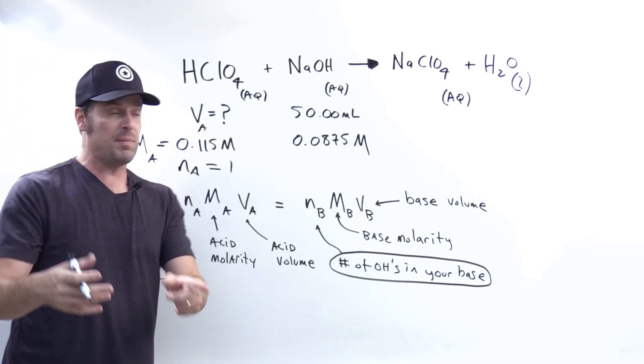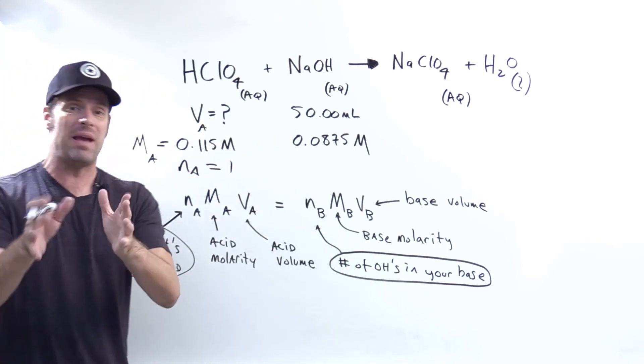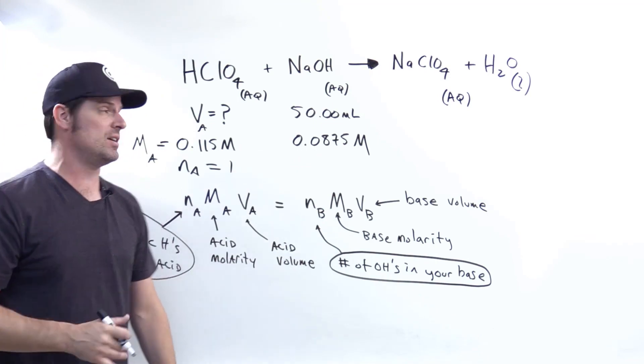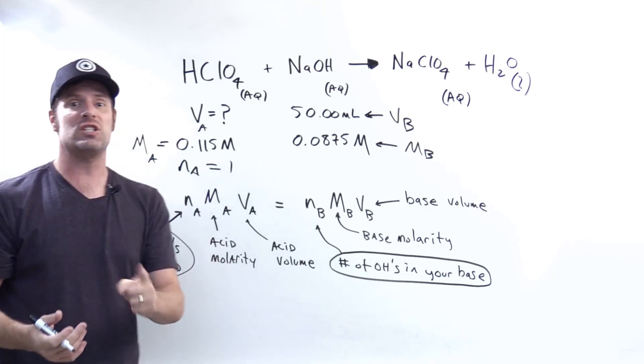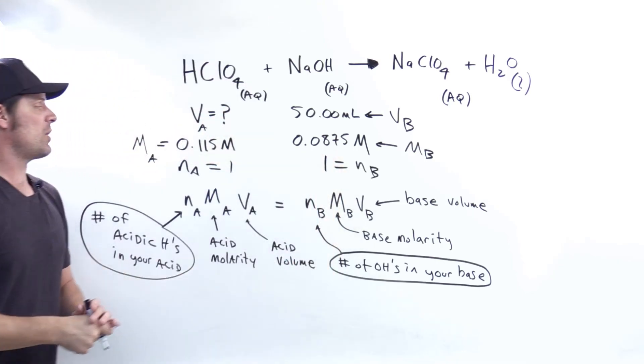On the flip side, we've got 50 milliliters as our base volume and this number as our base concentration. How many hydroxides or OH groups do we see in our sodium hydroxide formula? You just see one OH, so that is our NB.